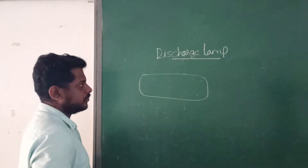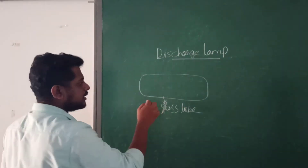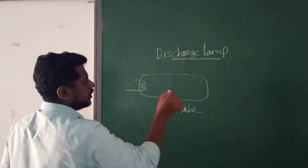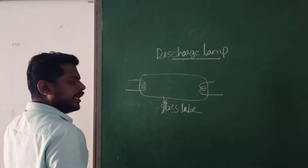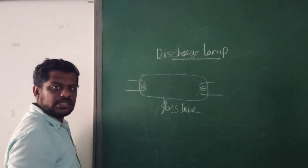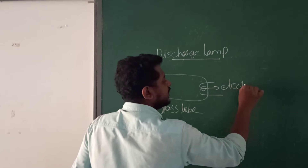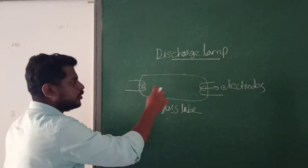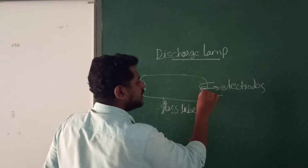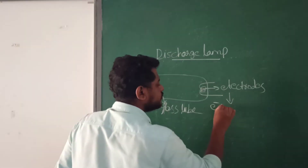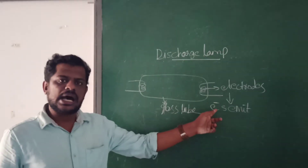A discharge lamp is like a glass tube. On both sides of this glass tube there are two electrodes. These electrodes are used to emit electrons. When current passes through these electrodes, electrons will emit or charge will emit from them.